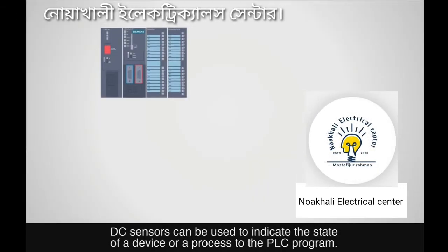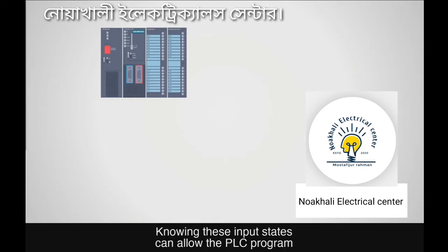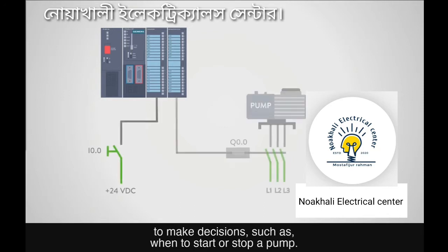DC sensors can be used to indicate the state of a device or a process to the PLC program. Knowing these input states can allow the PLC program to make decisions, such as when to start or stop a pump.